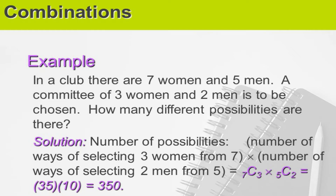We need to select three women out of seven women, and two men out of five men. When we say 'and', you need to multiply. So that will be C(7,3) multiplied by C(5,2). The answer is 350.